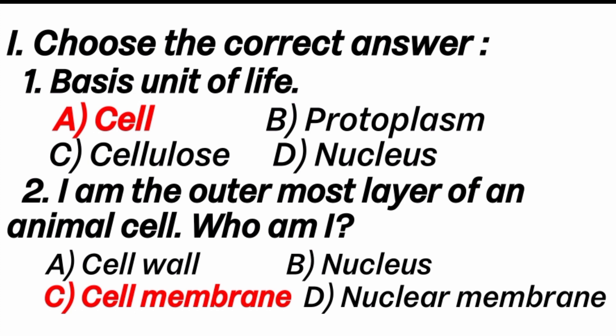First question: basic unit of life. Answer is option A — cell, because the cell is the basic unit of all living organisms. Second question: I am the outermost layer of an animal cell, who am I? Answer is option C — cell membrane. Note that the outermost layer of a plant cell is the cell wall, and for the nucleus it is the nuclear membrane.